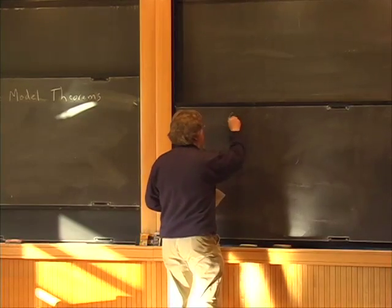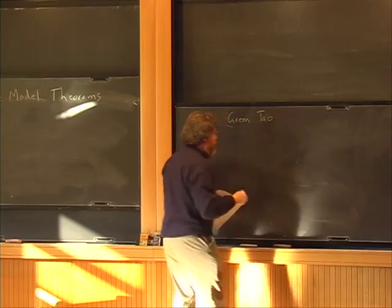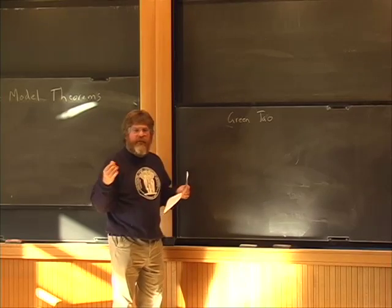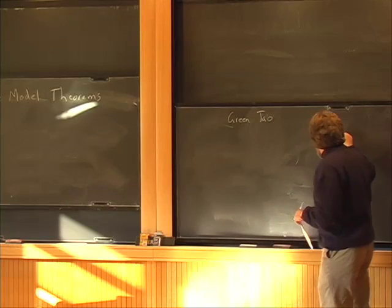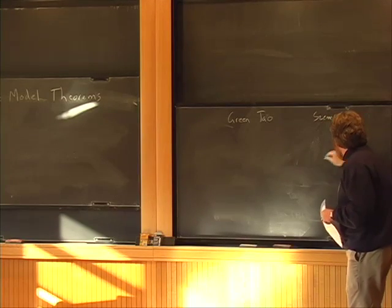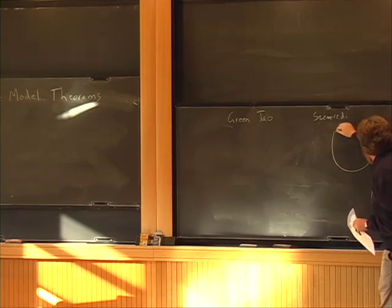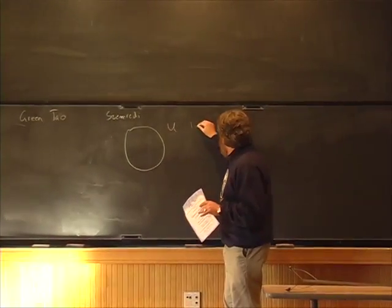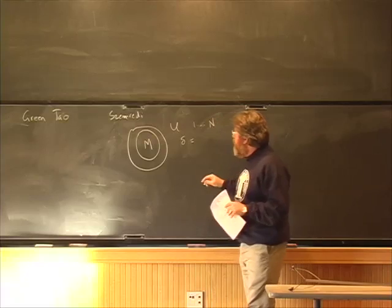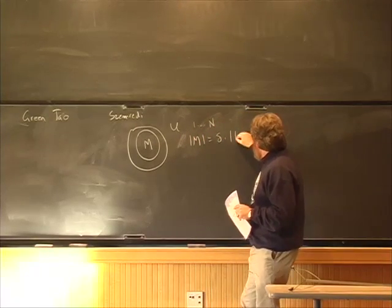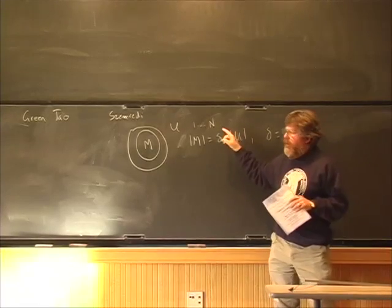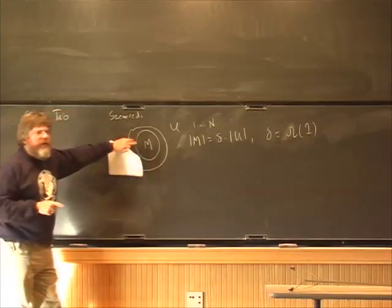What was being done in additive combinatorics? Just recently, Green and Tao proved that there are arbitrarily long arithmetic progressions in the set of primes, and they were leveraging work of Szemerédi from fairly long ago. That said, if you have a universe of all numbers up to n, and you've got a very large set M of constant density—size of M is delta times the size of U, where delta is constant independent of n—then M has arbitrarily long arithmetic progressions.